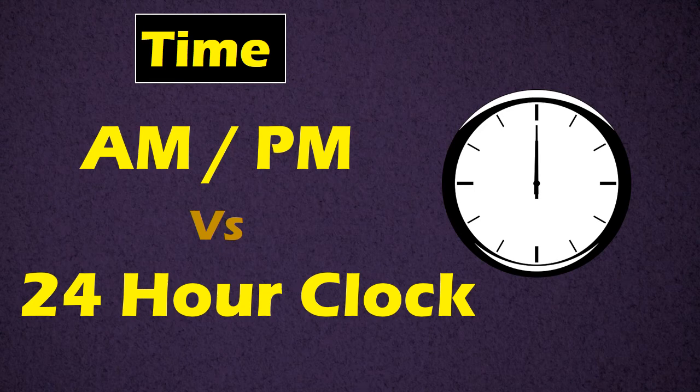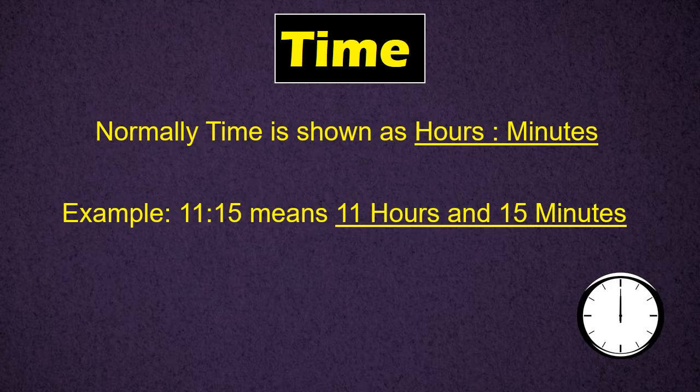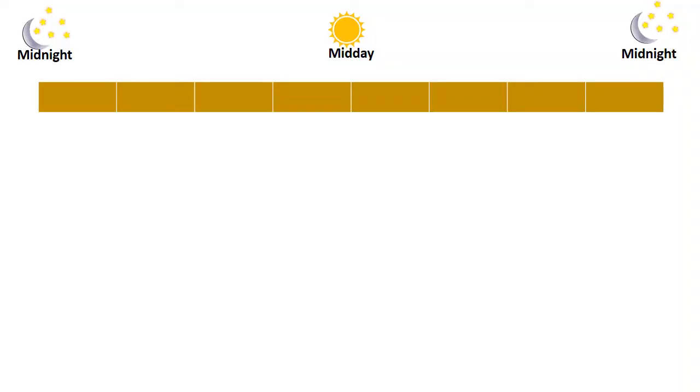There are two ways of telling the time in English: first, AM/PM, or you can say 12-hour clock, and second is the 24-hour clock. Normally, time is shown as hours and minutes — for example, 11:15 means 11 hours and 15 minutes. Look at this image; there are two main ways to show the time.